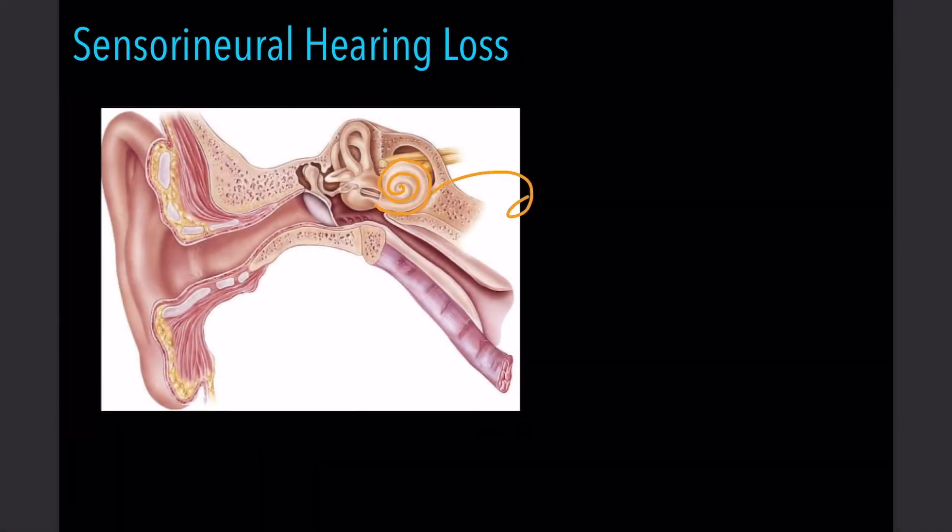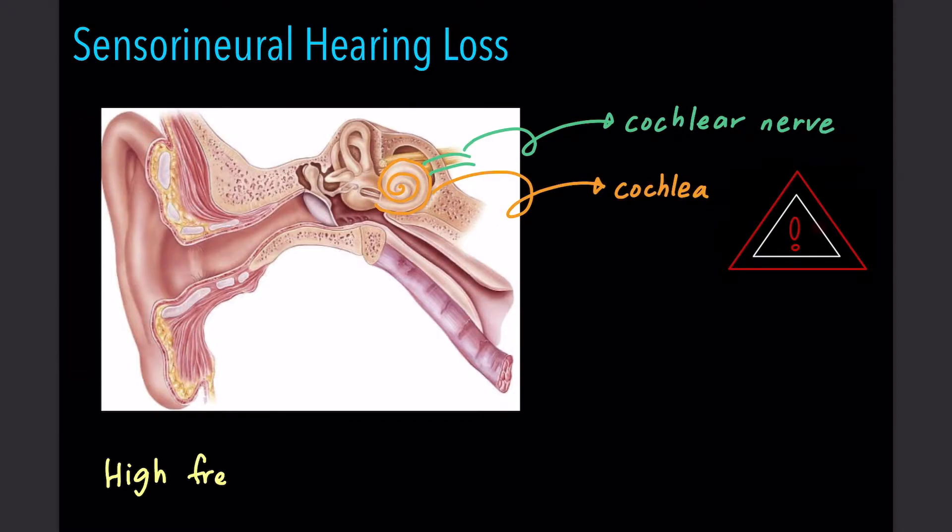Sensorineural hearing loss occurs when there is a problem within the cochlea or the cochlear nerve transmitting the sensory information. High-frequency hearing loss refers to troubled hearing sounds from 2000 to 8000 Hz range and is often lost first in sensorineural hearing loss.